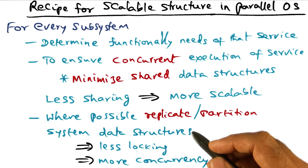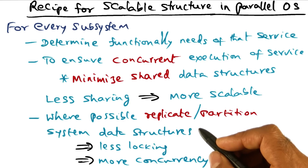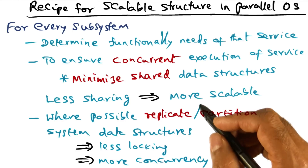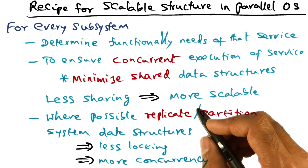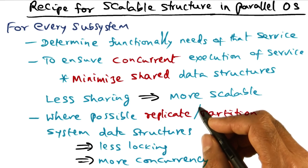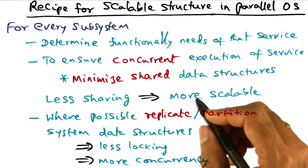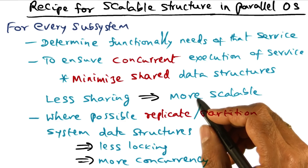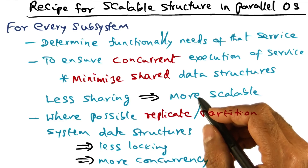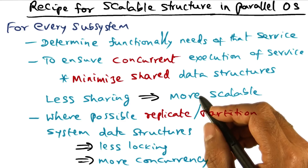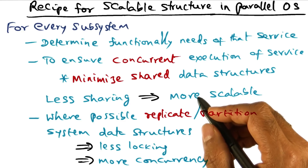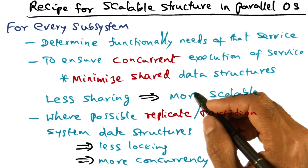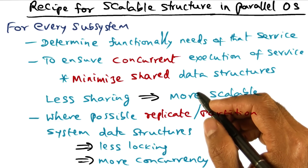Coming back to the example of the page fault service, the page table data structure that the operating system maintains on behalf of the process is a logically shared data structure. But if we want true concurrency for updating this data structure, it is inappropriate to have a single data structure representing the page table for a process, because in order to do the function of page fault service, you have to lock the data structure, which leads to a serial bottleneck.